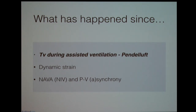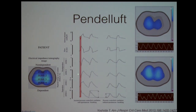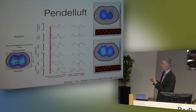We also learned something about Pendelluft. Pendelluft is the movement of air inside the lungs from one area — the upper zone — to the non-dependent zones, in a patient who hasn't started breathing yet. You can see here the volume of the lung in different parts: upper parts, middle parts, lower parts. In the beginning of an assisted breath, air is actually moving from the upper parts — decreasing there and increasing in the lower parts. This could be one explanation for ventilator-induced lung injury in assisted ventilation.